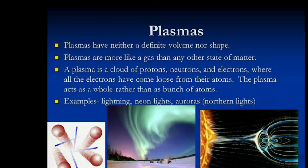Plasmas have neither a definite volume nor shape. Plasmas are more like a gas than any other state of matter. A plasma is a cloud of protons, neutrons and electrons, where all the electrons have come loose from their atoms. The plasma acts as a whole rather than a bunch of atoms. Examples of plasma include lightning, neon lights, and auroras.